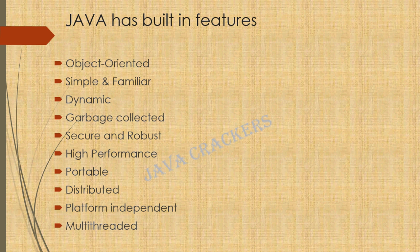Java is platform independent, as we already discussed. Java also contains one more feature called multi-threading. This allows the programmer to write programs that can do many tasks simultaneously, and these tasks will be performed using the same memory space.